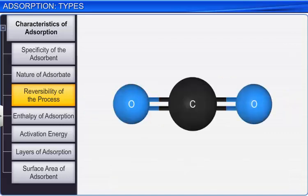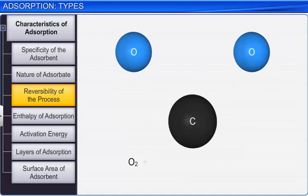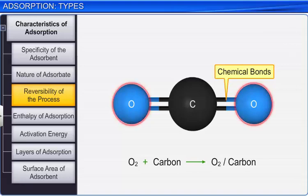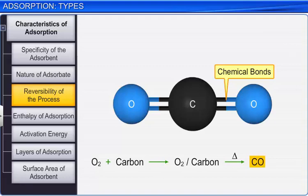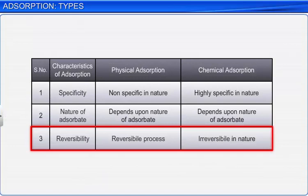During chemical adsorption, chemical bonds are formed between the adsorbate and the adsorbent molecules. For example, when oxygen is chemically adsorbed on carbon, reversing the process does not release oxygen but instead releases carbon monoxide or carbon dioxide. Hence, chemical adsorption is irreversible in nature. We can therefore conclude that while physical adsorption is a reversible process, chemical adsorption is irreversible.